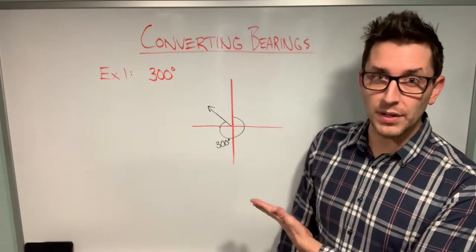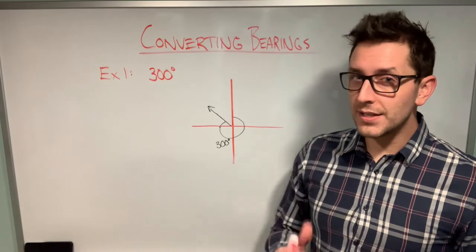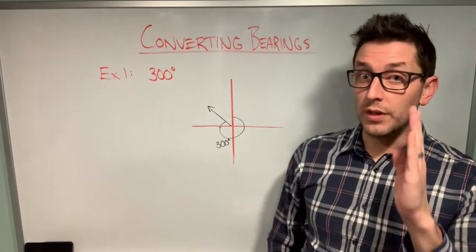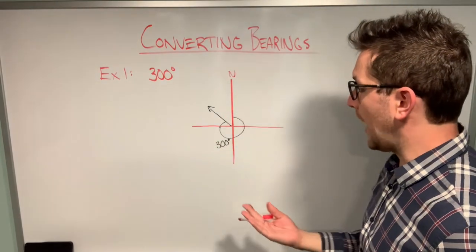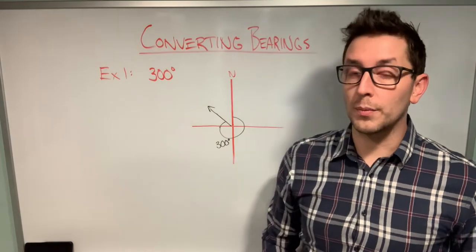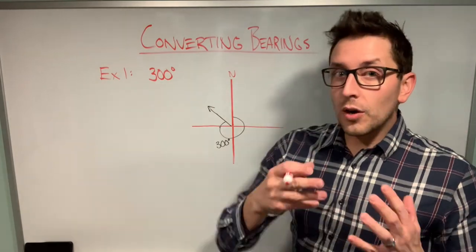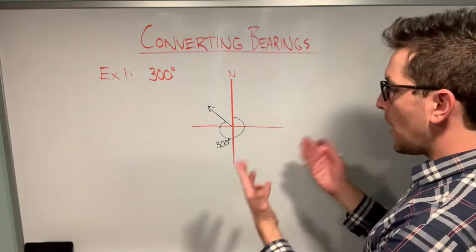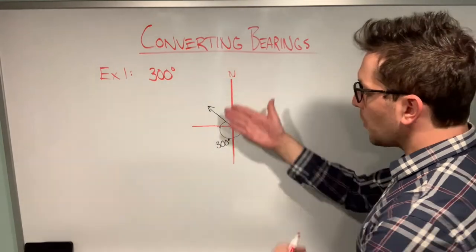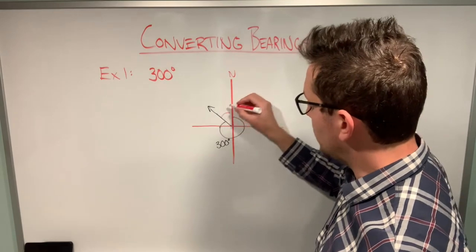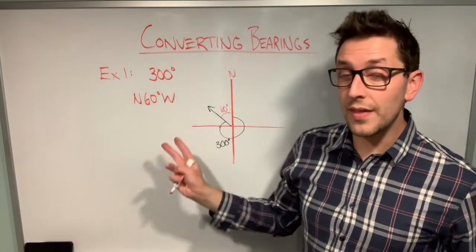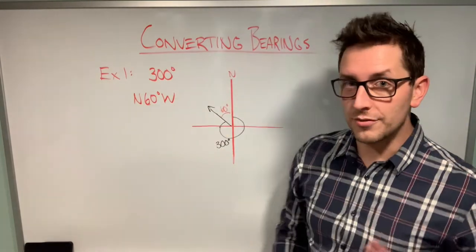Drawing a quick sketch, the vector is very close to the northern axis, so in quadrant bearing form it should be expressed as N[something]W. To find how many degrees toward the west we rotate, remember a full circle is 360 degrees. Starting at the northern axis and rotating 360 degrees back to the top, I can see a wedge of 60 degrees between the full rotation and the vector. So a true bearing of 300 degrees converts to a quadrant bearing of N60°W.